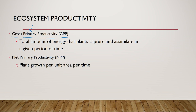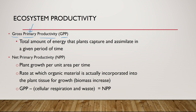Algae are typically found in our aquatic ecosystems, plants in our terrestrial ecosystems. The amount of sunlight they actually capture through photosynthesis is what we call our gross primary productivity. Net primary productivity is essentially the plant growth — the energy that the plants don't use that ends up becoming part of the biomass. It's the rate at which organic material is actually incorporated into the plant tissue for growth. You take your GPP and subtract what is used for cellular respiration and what is lost as waste, and you have your NPP.